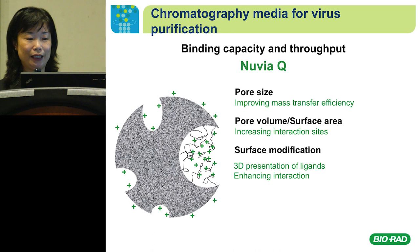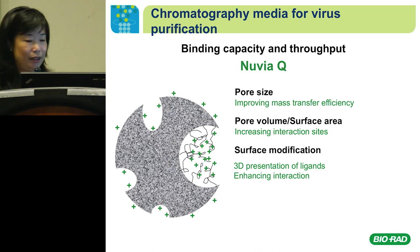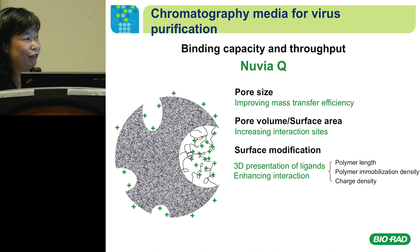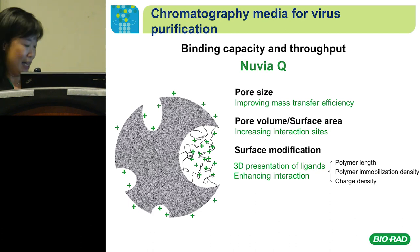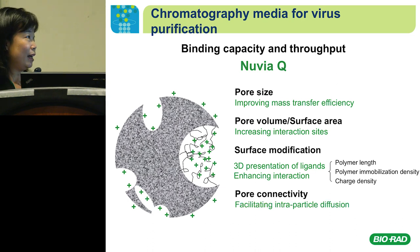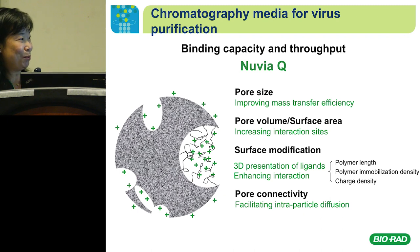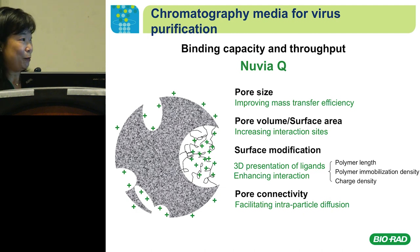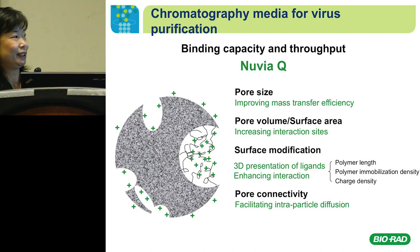We increase the binding capacity by incorporating polymers on the internal surface inside the pores. This way we present charges inside the pores in a 3D manner — you have another layer of binding functionality in addition to the charges on the outer bead surface. Inside the pores there are also charges presented in the internal spaces, giving extra binding sites to grab the virus. By further optimization we can change the length of the polymer, the density of the polymer, and the charge density to fine-tune the binding capacity and selectivity of the resin.